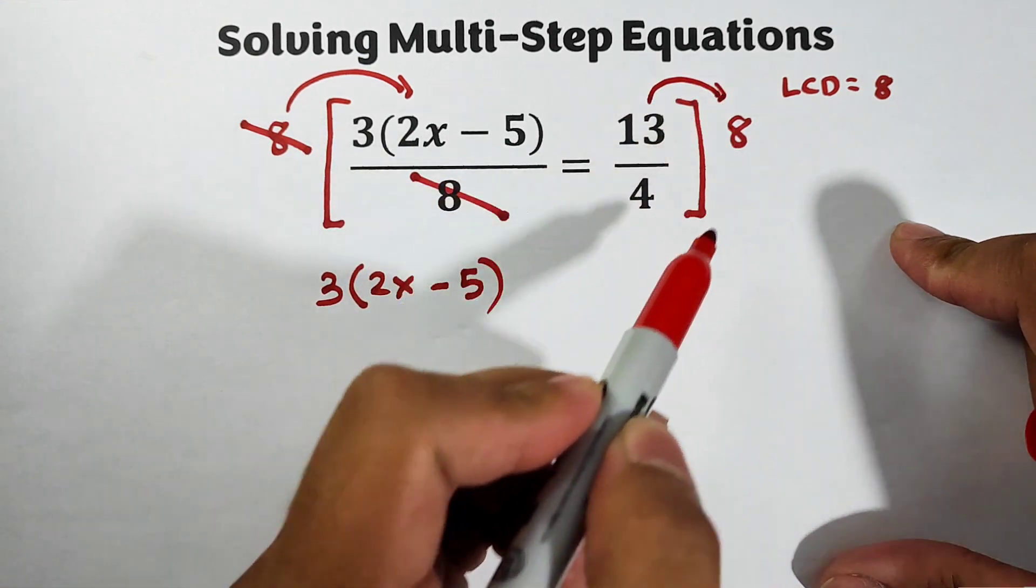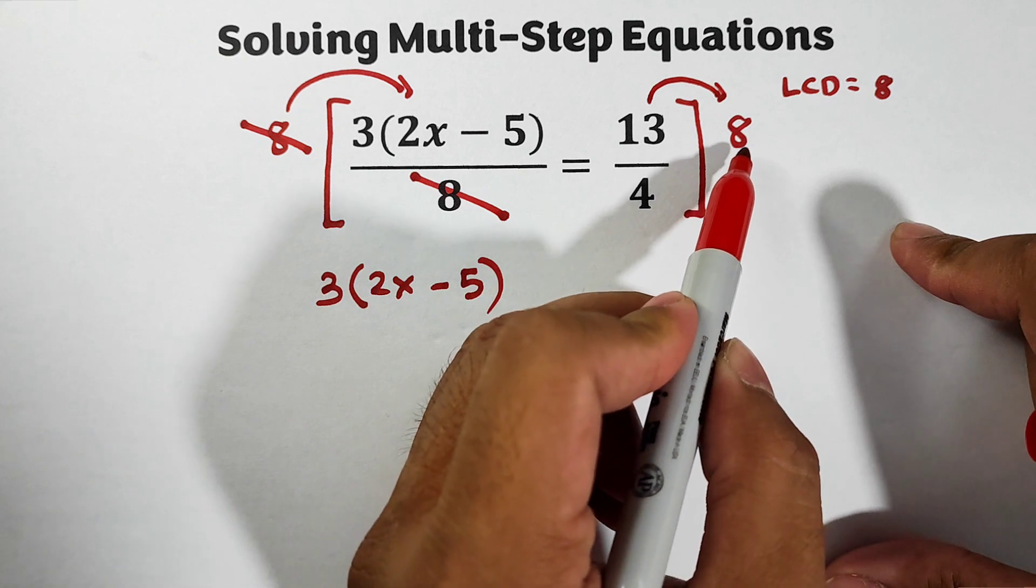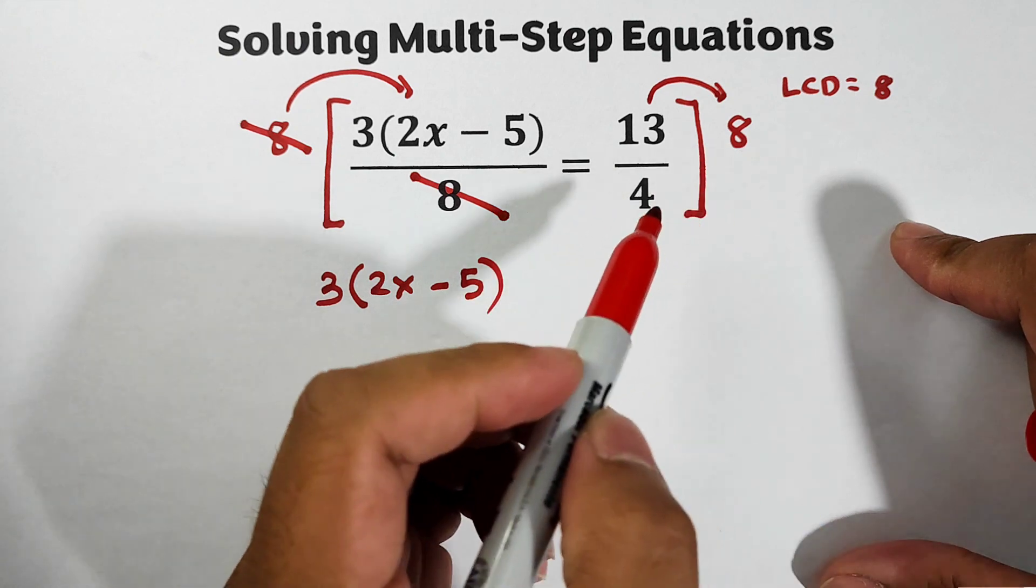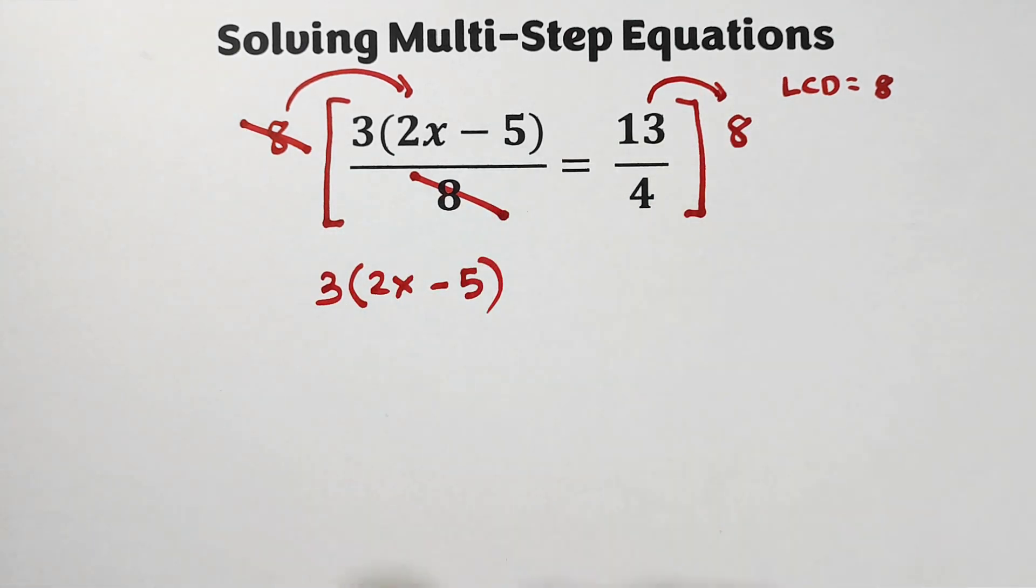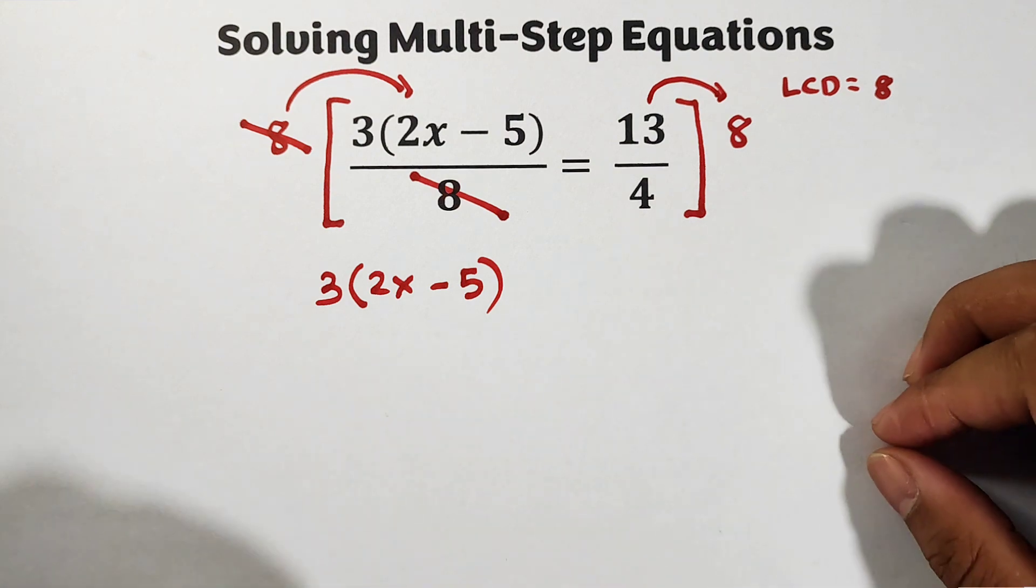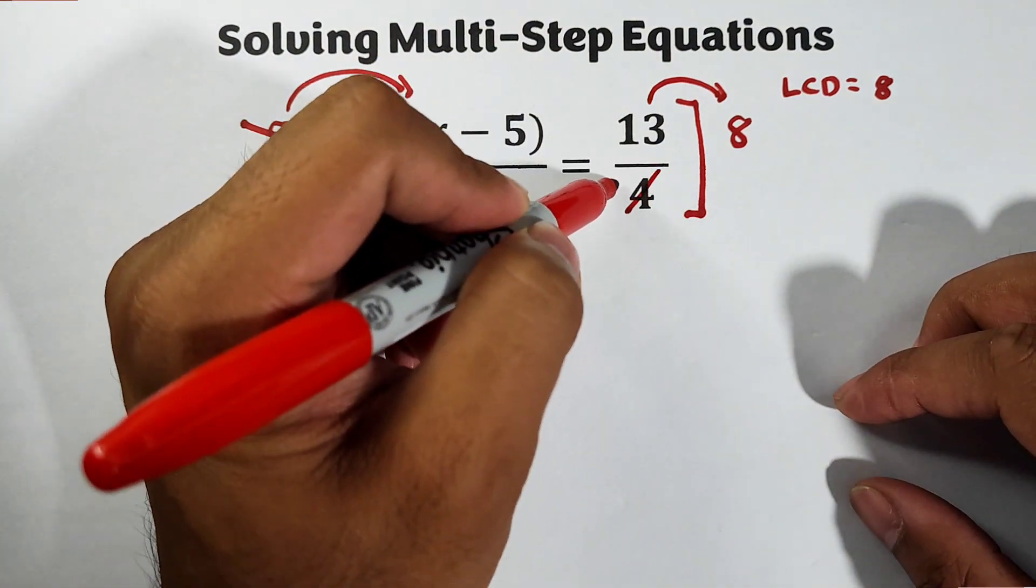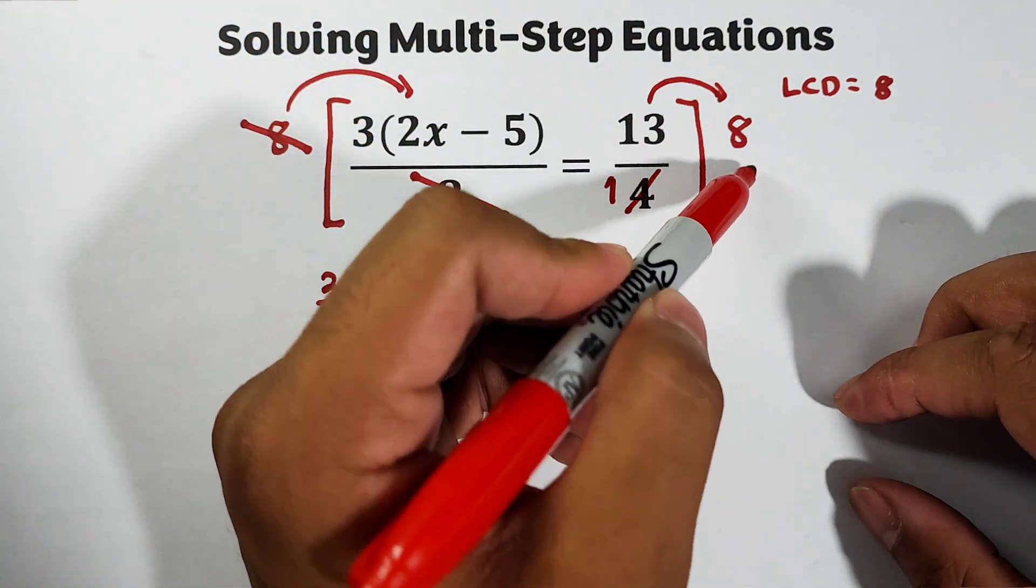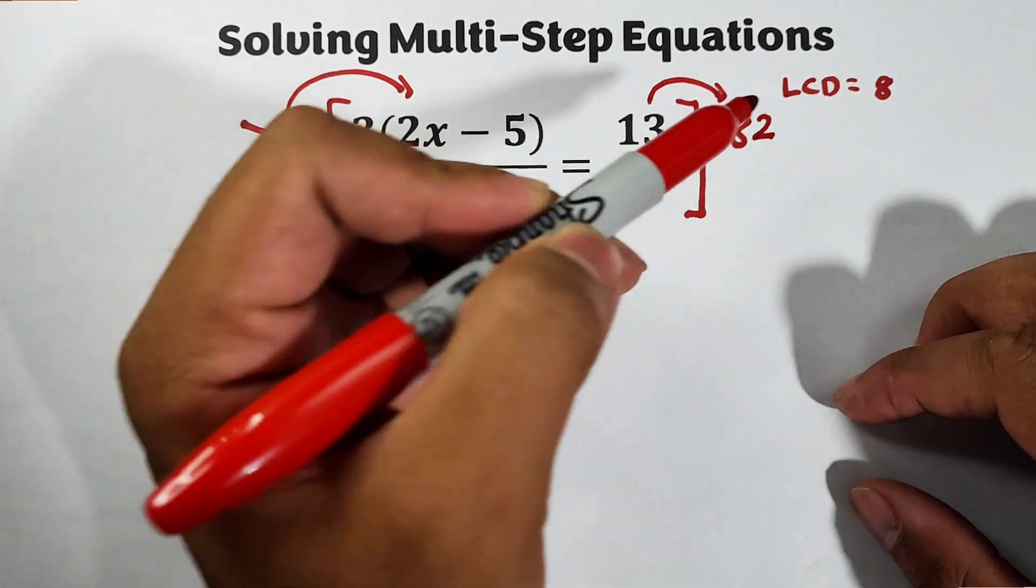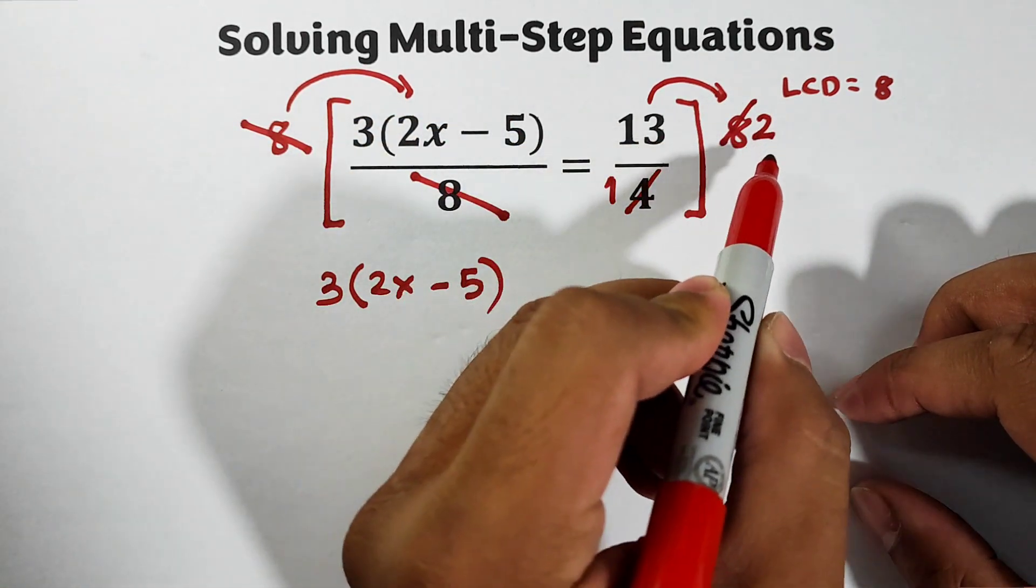On the other side we will multiply 13 over 4 by 8. And as you can see, there's an 8 in the numerator and we have a 4 in the denominator and we can use cancellation. We can cancel this out, it will become 1 and the 8 will become 2, and that is 13 times 2 which is equal to 26.